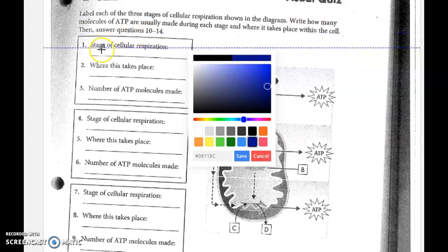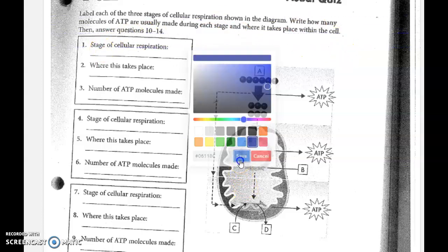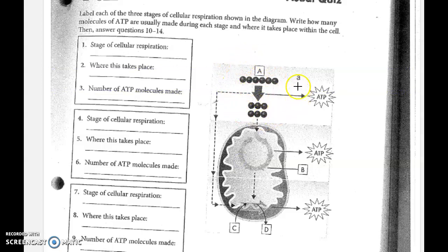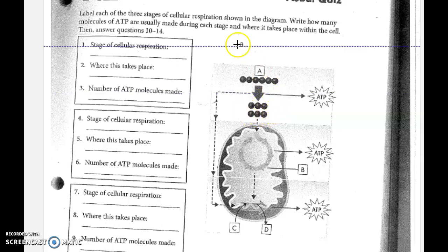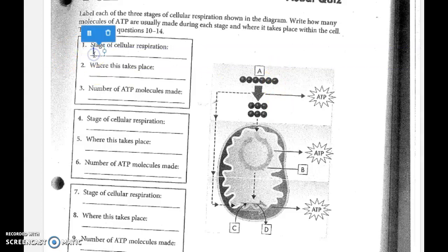So our first stage here is glycolysis. Glucose is being broken down into two molecules of pyruvic acid. We have six carbons here, split in the middle — we get two three-carbon sugars. Those are pyruvic acid. This is glycolysis, happening in the cytoplasm as the glucose is approaching the mitochondria. It's taking place in the cytoplasm.